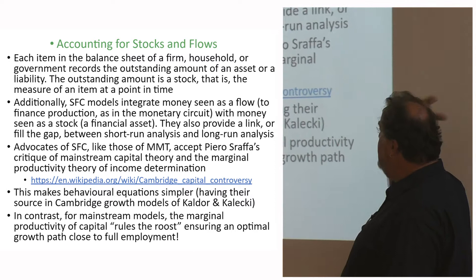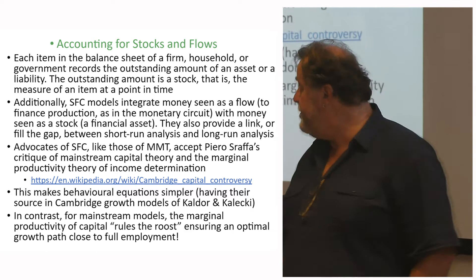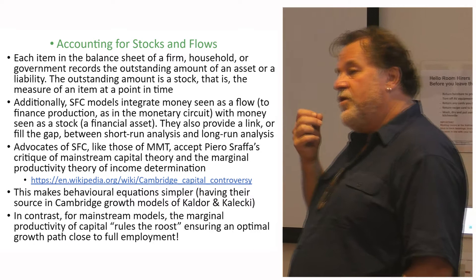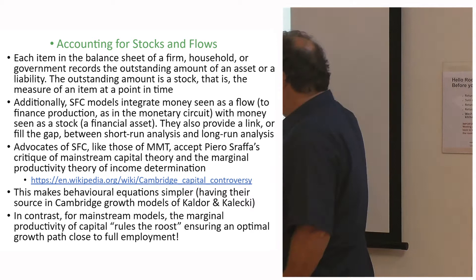It's crucial to recognise that both SFC modellers and MMT accept Piero Sraffa's critique of mainstream capital theory and of the marginal productivity theory of income distribution. This is important because if you fall back on mainstream capital theory, you get really conservative outcomes. There's a good wiki site with links to it for those interested.